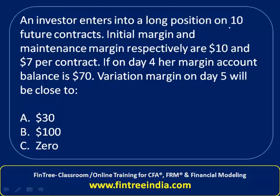An investor enters into a long position on 10 futures contracts. Initial margin and maintenance margin are respectively $10 and $7 per contract. If on day 4 her margin account balance is $70, what would the variation margin on day 5 be closest to?